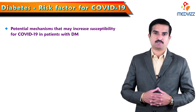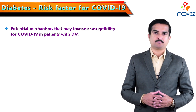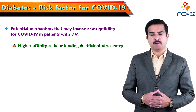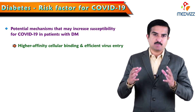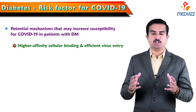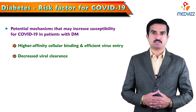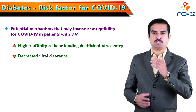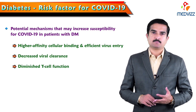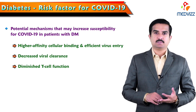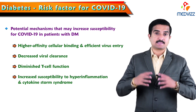One of the major factors is that in patients with diabetes there will be higher affinity cellular binding and more efficient viral entry, making viral entry much easier in diabetic individuals. At the same time, viral clearance mechanisms will be low in diabetic patients. Along with this, there will be diminished T-cell function and increased susceptibility to hyper-inflammation and cytokine storm syndrome.